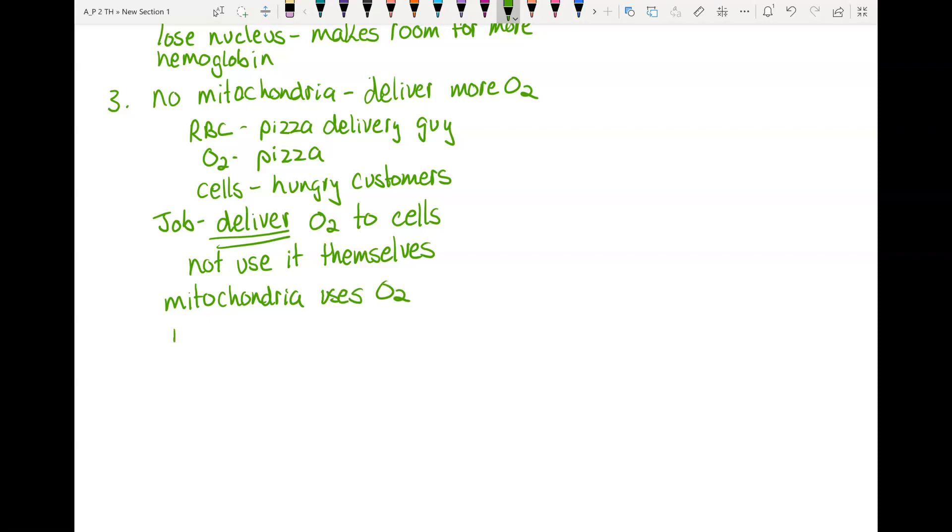So if you take away the mitochondria, then it becomes impossible for the cell to use oxygen. So the significance of not having mitochondria means that they can't use oxygen. This way they instead carry it and give it to other cells.